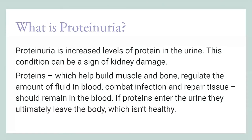Proteinuria refers to increased levels of protein in the urine. We talked specifically about albumin, but proteinuria refers to proteins in general that are in your blood. This condition can be a sign of any kidney damage. Protein helps build muscle and bones, regulate blood, combat infections, and repair tissue — it should remain in the blood. If protein enters the urine, it ultimately leaves the body, which isn't healthy. Protein is really important for your muscles and bones, as your body relies on protein most of the time.